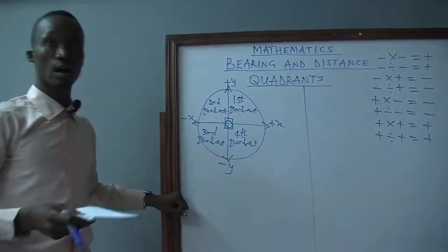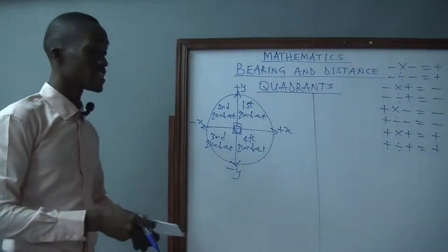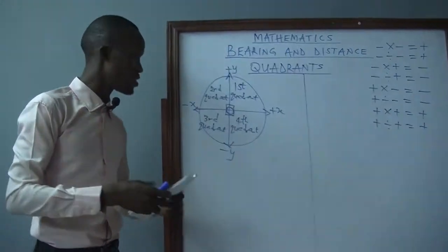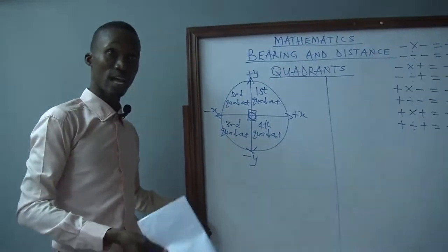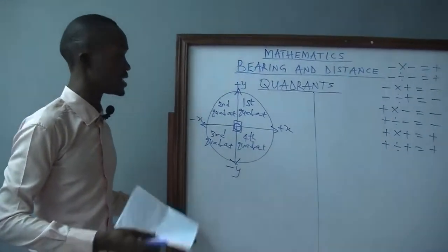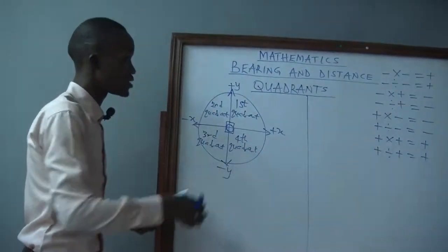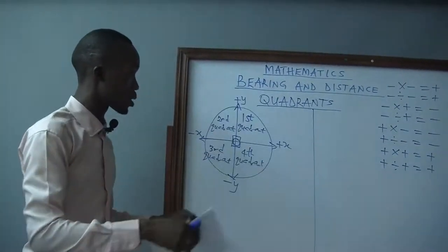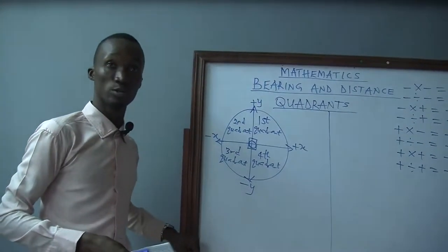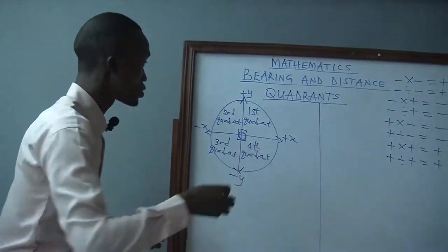What we want to derive here is to know the sign, because most students are used to calculators. But at times questions will ask us not to use a calculator. So many students will have a problem at that point because they won't know what to do. What we are trying to do here is how to make calculations under quadrants without using a calculator, with the help of a four-figure table.